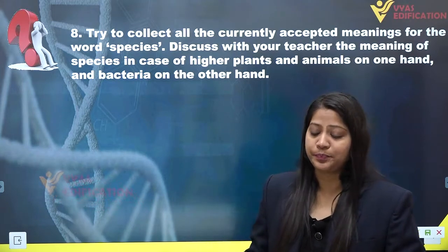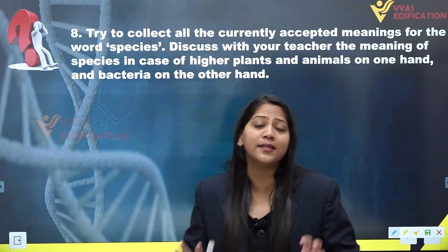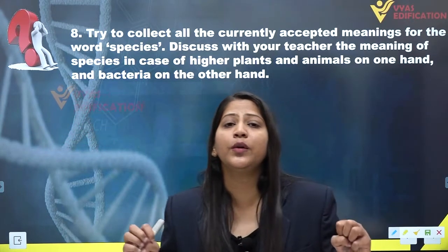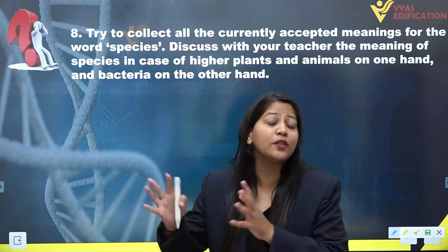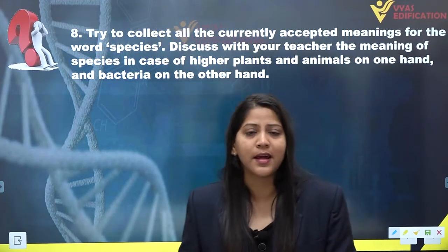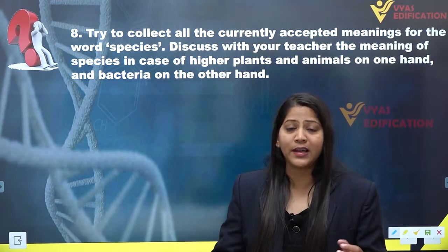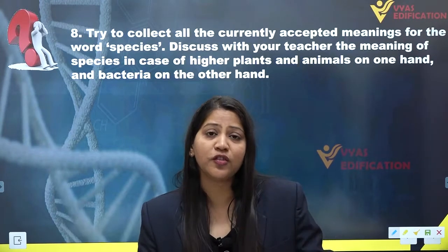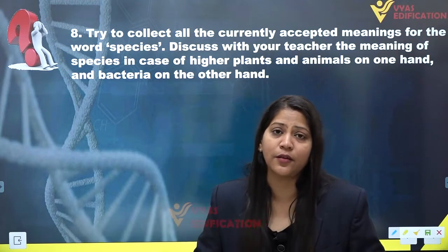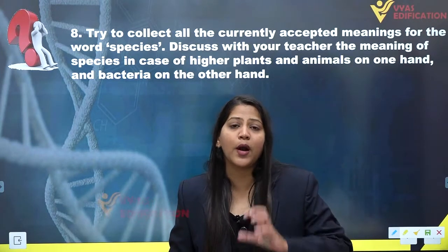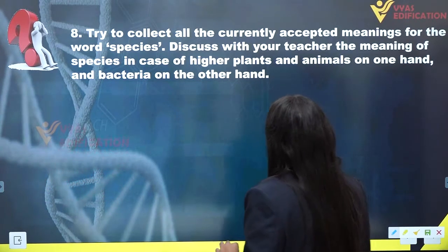In the case of higher plants and animals, species or any individual organism are distinguished from each other on the basis of morphological characters. In the case of bacteria, we classify species on the basis of their shape. Hence, the species concept for higher plants, animals, and bacteria are actually different.